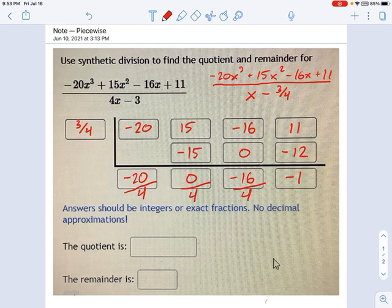So when you look at the quotients, it's going to be negative 5x squared, not negative 20x squared. There's still a 0 for x. And then when you get to the constant term, it's negative 4 instead of negative 16.